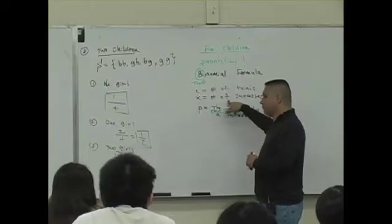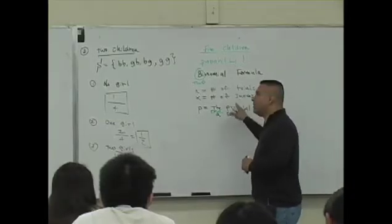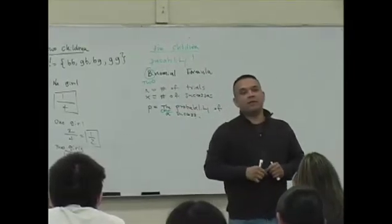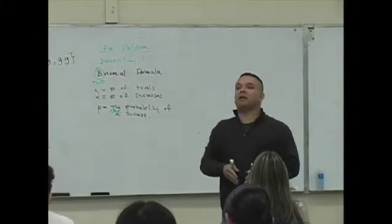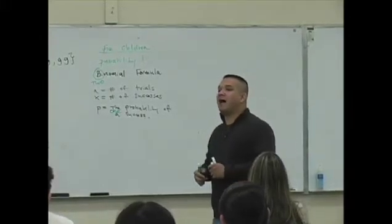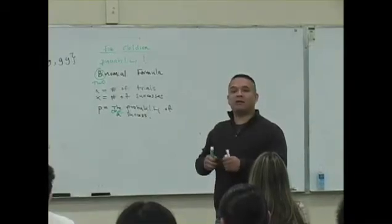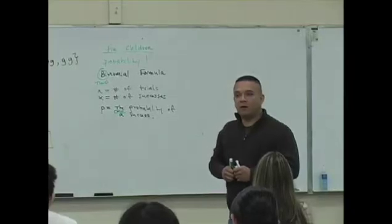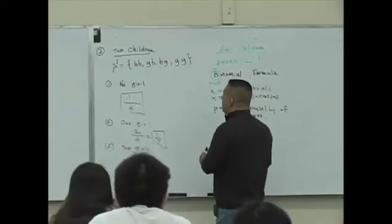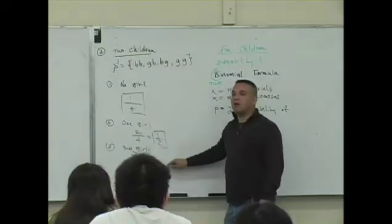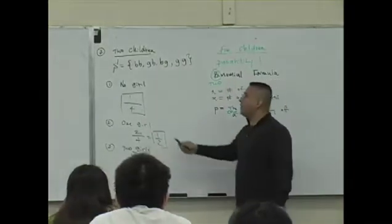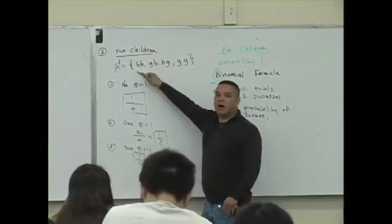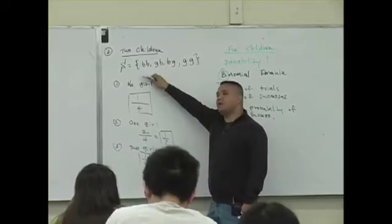X is the number of what? Successes. You guys okay with this? The reason I'm asking, or the reason I ask what you'd rather have, boys or girls, is because maybe you think of a success as having a son, or maybe you think of a success as having a daughter. So you're counting successes when you have five children. So here's the deal. In your number of children questions, with this binomial formula here, let your successes be not what you want to have, but let your successes be what's in the question.